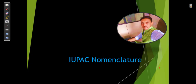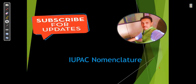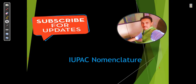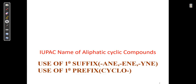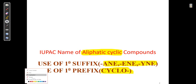My dear learner, let us start to discuss IUPAC nomenclature lecture 4. Today we are going to discuss the IUPAC name of aliphatic cyclic compounds. For aliphatic compounds we use ANE, ENE, and YNE suffixes, and for cyclic compounds we use the prefix 'cyclo'. We also continue with our story, which correlates our rules for IUPAC naming.